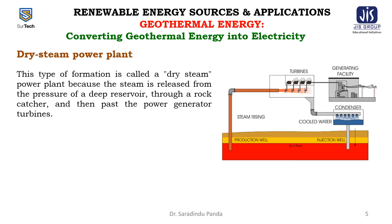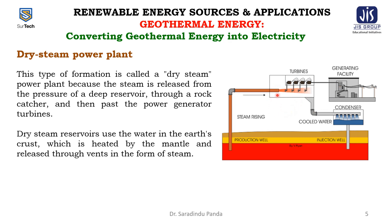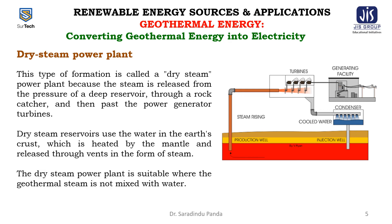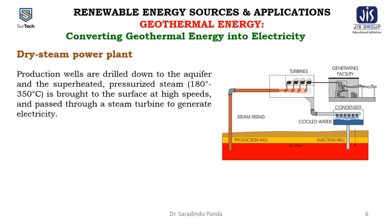This type is called a dry steam power plant because the steam is released from the pressure of a deep reservoir through a rock catcher and then past the power generator turbines. The dry steam reservoirs use water in the earth's crust which is heated by the mantle and released through vents as steam. The dry steam power plant is suitable where geothermal steam is not mixed with water. Production wells are drilled down to the aquifer, and superheated pressurized steam at 180°C to 350°C is brought to the surface at high speeds and passed through a steam turbine to generate electricity.